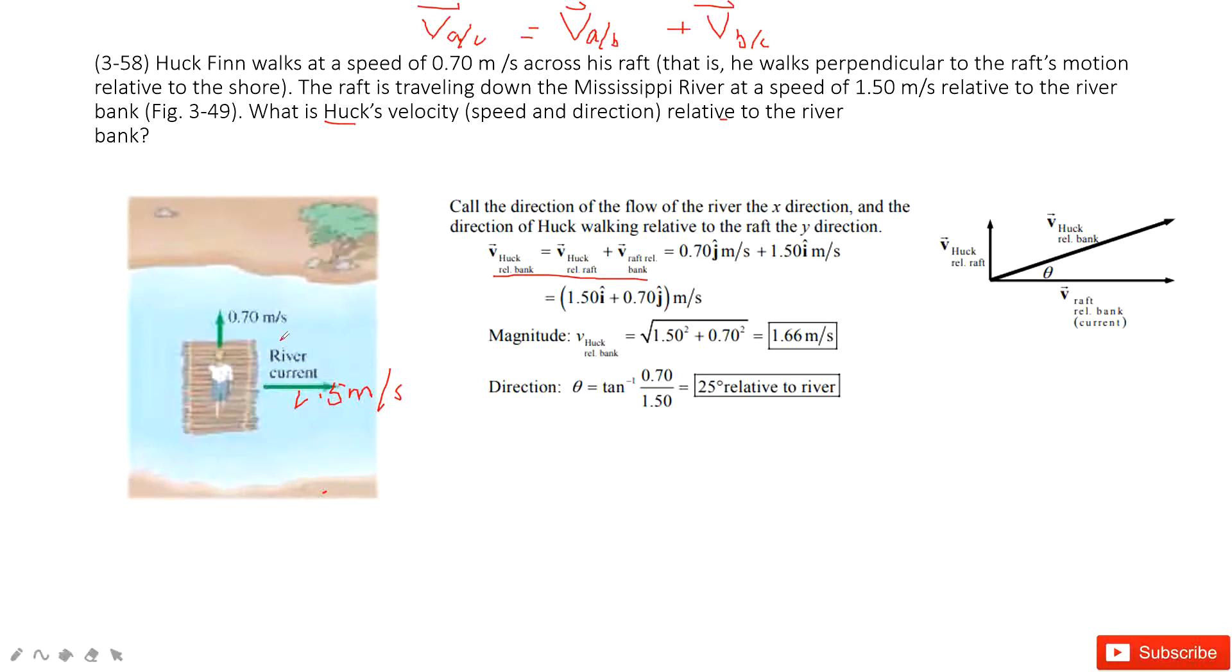We can see the velocity of the person to the raft is 0.7 in the y direction, which is the j component. The velocity of the raft to the bank is 1.5 in the x direction, the i component. We can find the velocity of the person to the bank in vector format with both x and y components. Therefore, we can calculate its magnitude and direction angle theta.